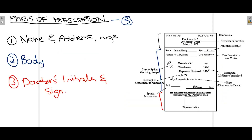Now talking in detail about the different parts of the prescription. Firstly, we have the part shown in black, which is the name, address, and sometimes age of the patient. We write down the name of the patient, the address, and sometimes age. The doctor's details are also mentioned in this first part — you can see the prescriber's information, the address of the clinic or hospital, and sometimes the DEA number or any other number of the doctor's license.